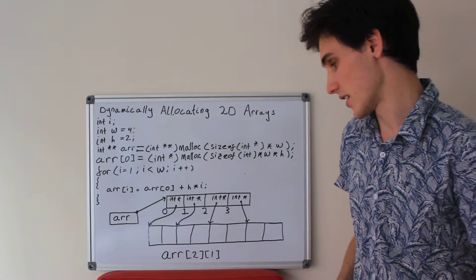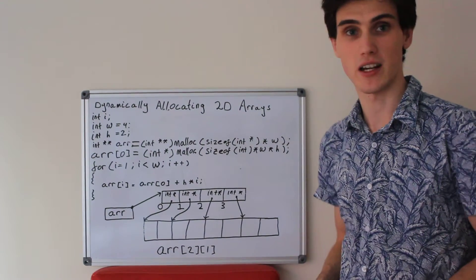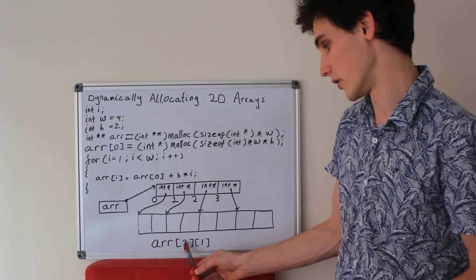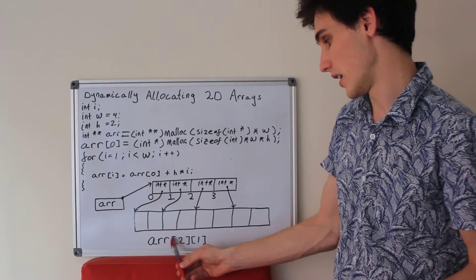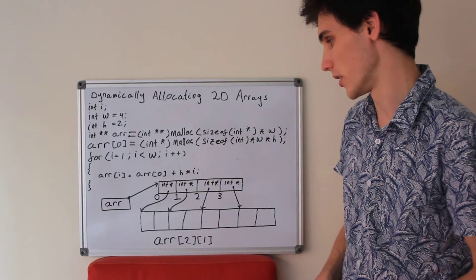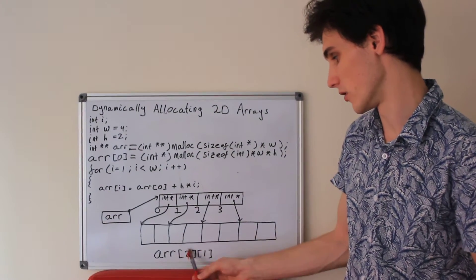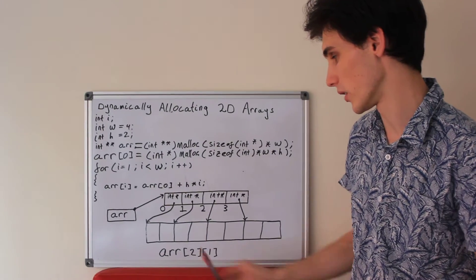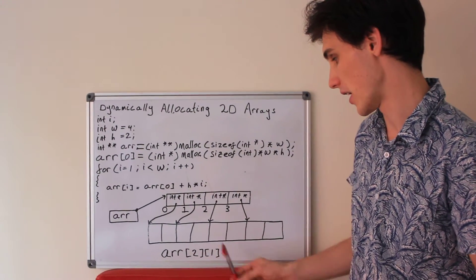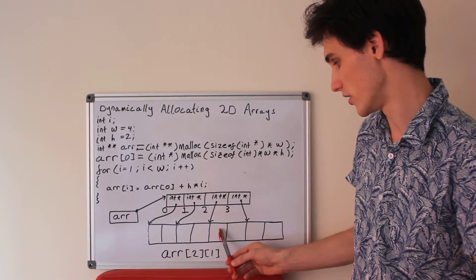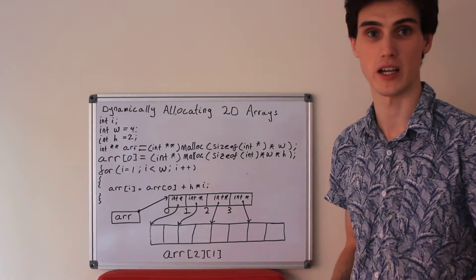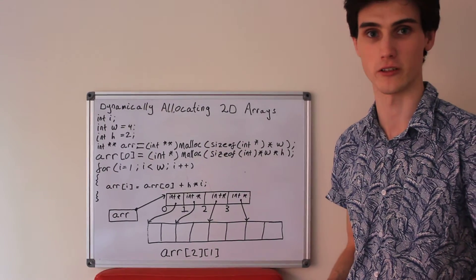To access an element within our two-dimensional array, we can simply call upon the row number and then the column number. So indexing with 2, 1 will give us 0, 1, 2 — then 1, 0, 1 — which gives us this element out of our two-dimensional array.